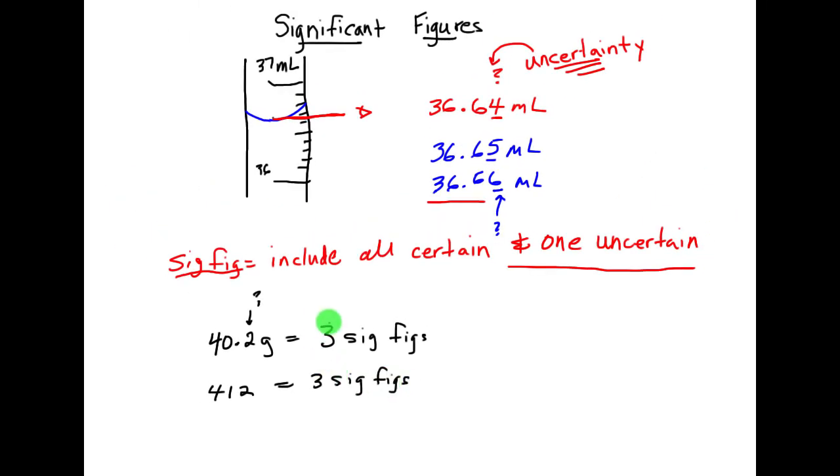So there's two things here. One, if you make the measurement, you need to record the correct number of significant figures. To do that, always make a guess on the last number. There should be uncertainty in your last measurement.